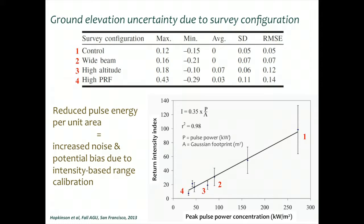Testing these three configurations, looking at the averages, there's not a lot of change for a wide beam, but high altitude and high PRF increases the offset a little bit. What we should really look at is the standard deviations and the RMSE. The standard deviation is an index of the noise, and the RMSE is an index of noise plus any bias. The errors as typically quantified seem to systematically increase from our control up towards high PRF.